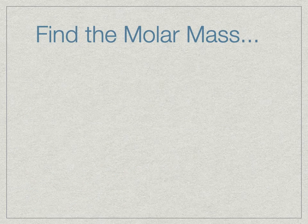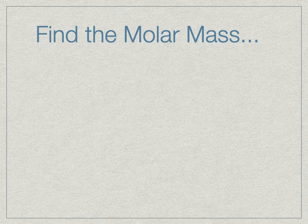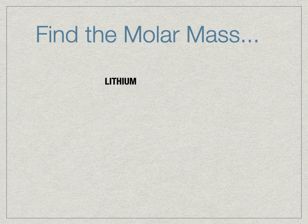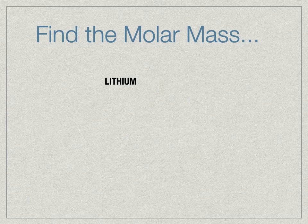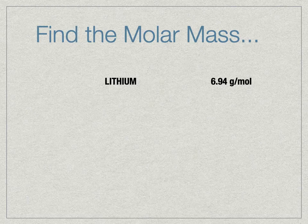We're going to practice a handful of these. As each substance comes up, grab your periodic table, pause the video, try to find the molar mass, and then check your answer. We'll start simple — lithium. Just go to the periodic table, pull it to two decimal places. You should have gotten 6.94 grams per mole.